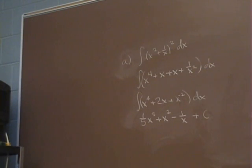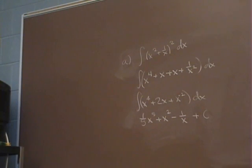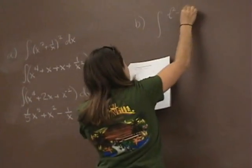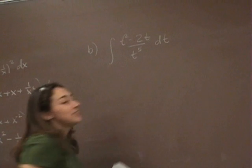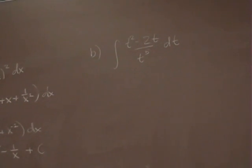All right, so that was part A number four. Let's take a look at part B number four. The integral is t squared minus 2t over t to the fifth dt. And we even did one just like this the day before. How do you do this problem? Break it apart.